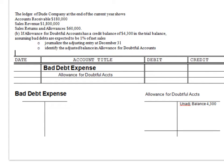I will continue using the information provided in exercise 9-3, set B, and this is the B part of this problem. And number one, as I mentioned in the earlier exercise, it is extremely important to first ask yourself the first question: what kind of method are we using? So, what method do we use to record or to account for accounts receivable?